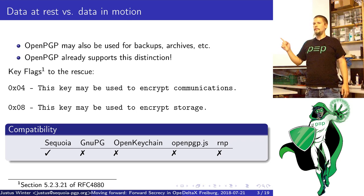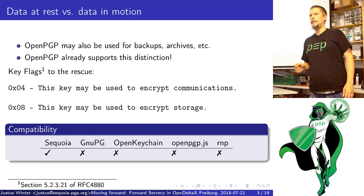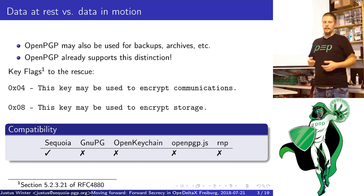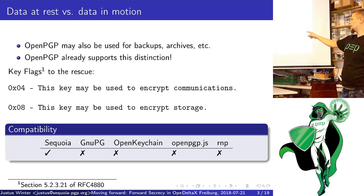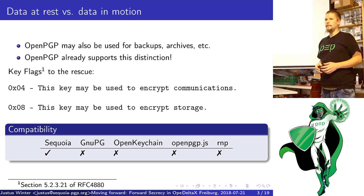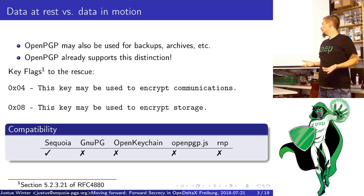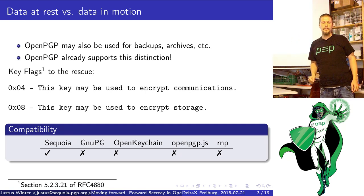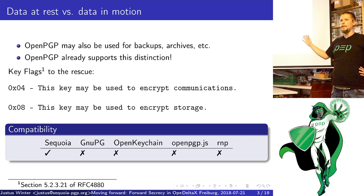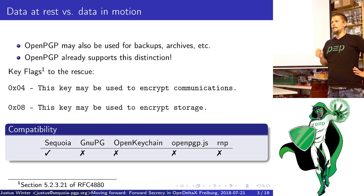OpenPGP already supports this distinction. There are key flags to mark a key suitable for protecting data at rest or protecting data in motion communications. I looked at some implementations — at the front you see Sequoia, then GnuPG, OpenKeychain, OpenPGP.js, and then RNP, which is Reboz's fork of NetPGP. I wanted to survey NetPGP because it's used in Delta Chat, but I picked RNP because they have a command line frontend. I looked at whether implementations make the distinction between data at rest or in motion, and none of the existing implementations make this distinction.